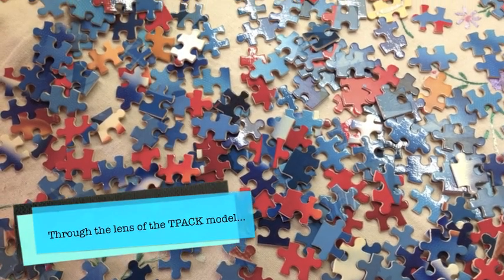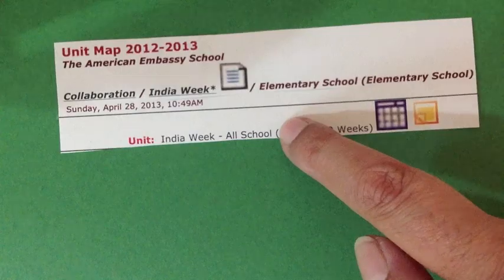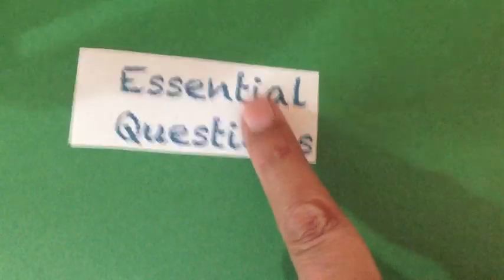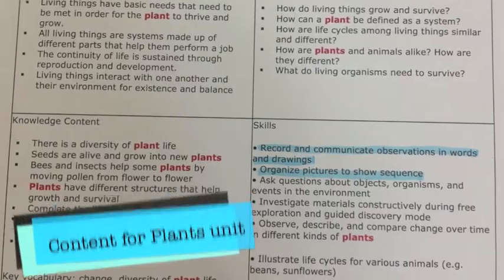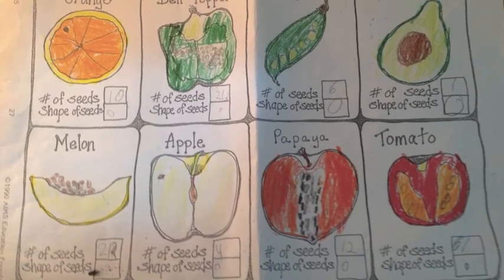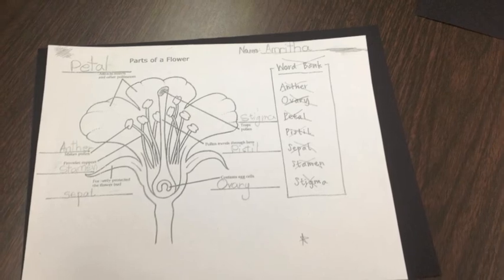Let's analyze the journaling project through the lens of the TPACK model and see how the pieces fit together. Within the TPACK framework, there are three primary forms of knowledge. The first one being content. We have the content for the India Week and the plant units documented using the Understanding by Design template in ATLAS. The enduring understandings, the essential questions, the knowledge content and skills for the unit are already in place.